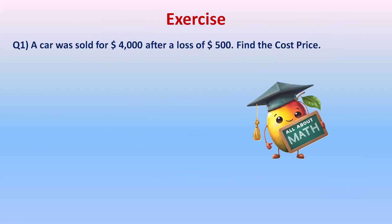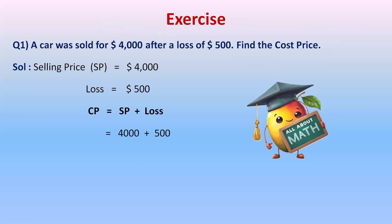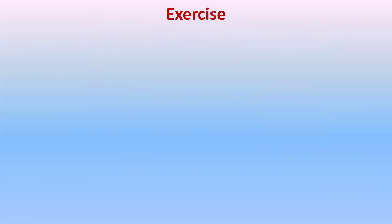Exercise A: A car was sold for four thousand dollars after a loss of five hundred dollars. Find the cost price. Sold means selling price is four thousand dollars, and the loss is five hundred dollars. Since we are finding cost price with a loss, we add: cost price equals selling price plus loss — four thousand plus five hundred equals four thousand five hundred dollars. Therefore, the cost price of the car is four thousand five hundred dollars.